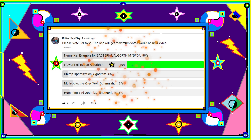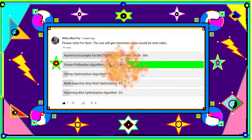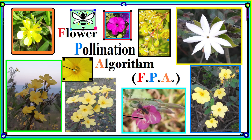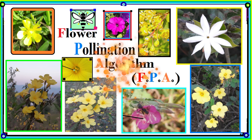In this video we will try to understand what is the Flower Pollination Algorithm all about. In upcoming videos we will try to understand the numerical example for the bacterial foraging optimization algorithm, but right now we will discuss what is the Flower Pollination Algorithm, how it works, the different mathematical models used for local search and global search, the rules for simplicity, and different areas where we can use this algorithm.